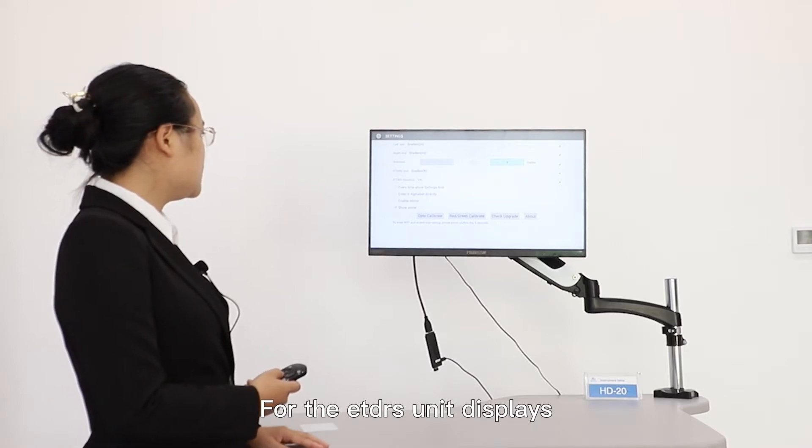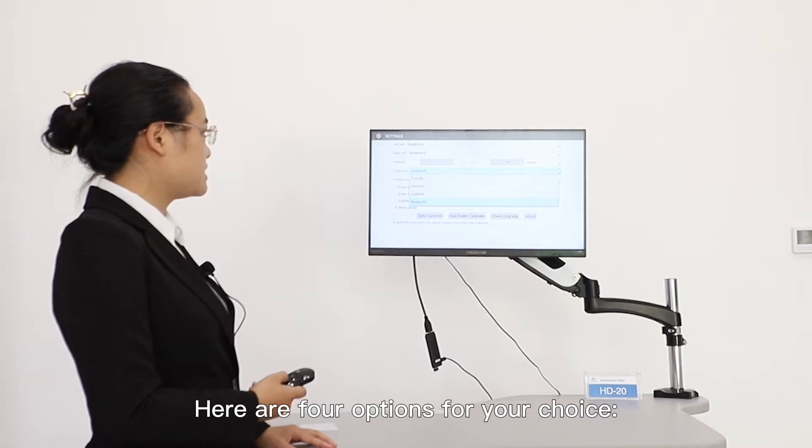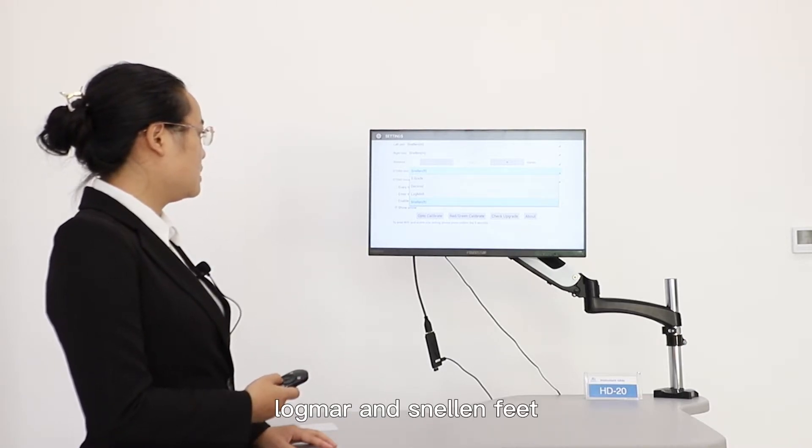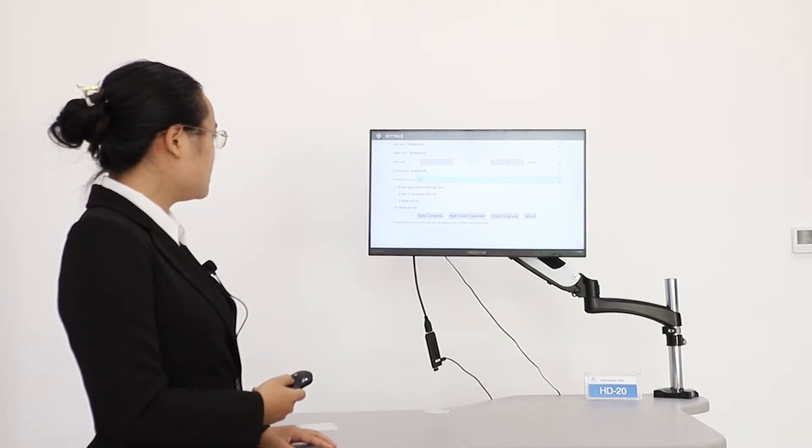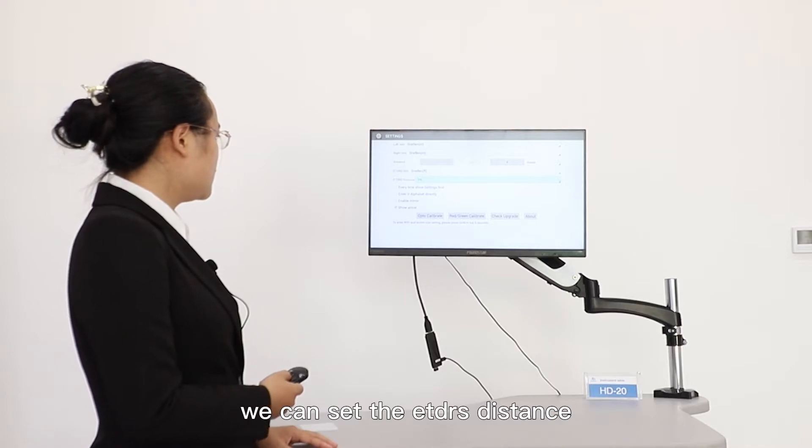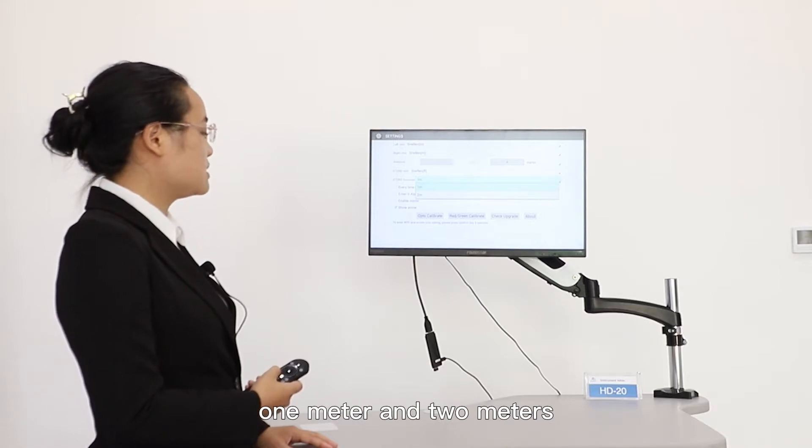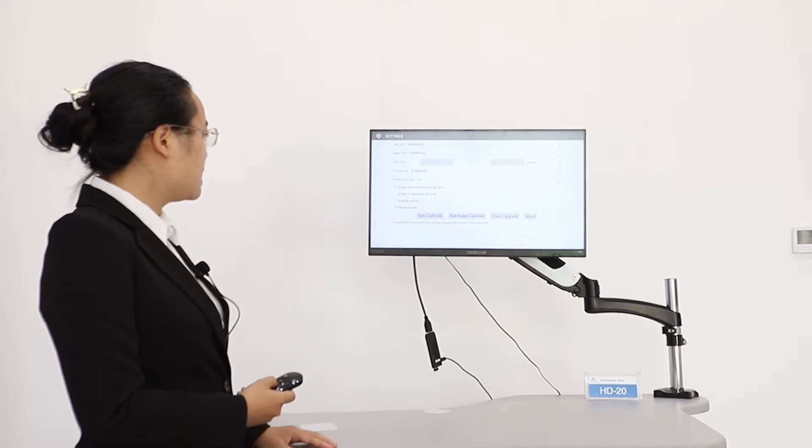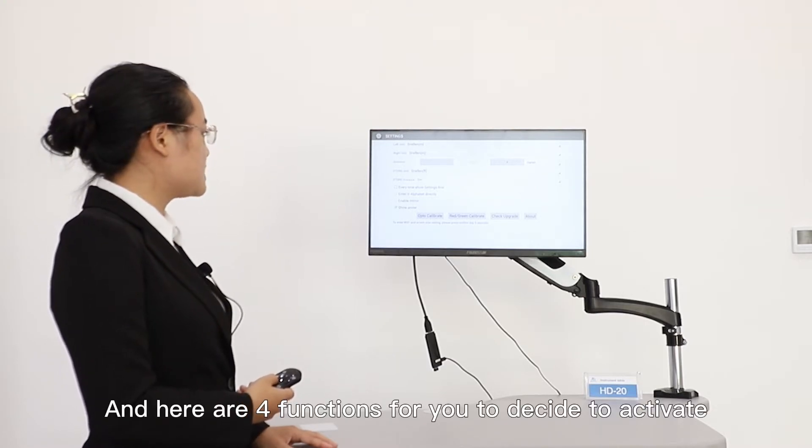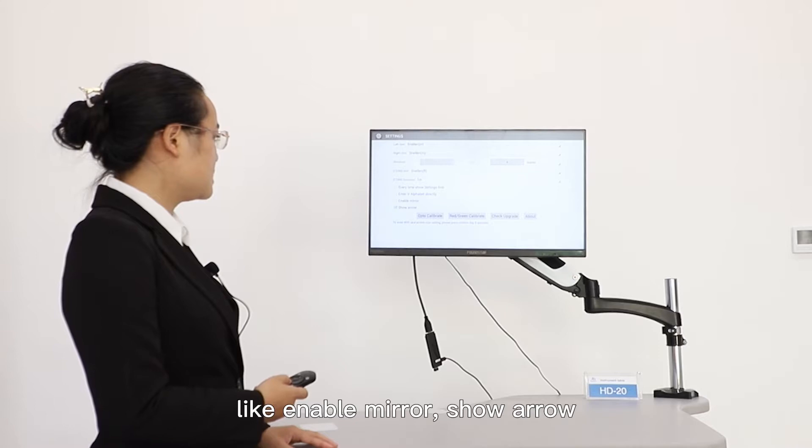For the ETDRS unit display, here are four options for your choice: five grade, decimal, logMAR, and scenario filter. And also, you can set the ETDRS distance. Here are two options, one meter and two meters. And here are four functions for you to design and activate, like enable mirrors, show arrows, and so on.